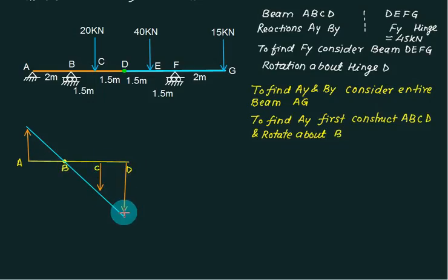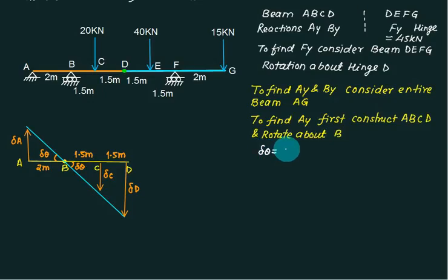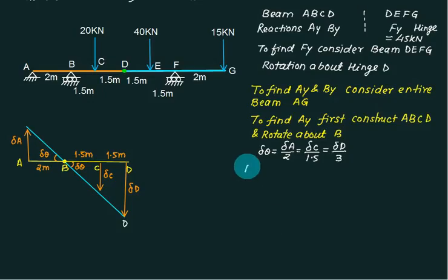This distance is 2 meters. The angular displacement is Del Theta. Del Theta equals Delta A divided by 2. Del C divided by 1.5. For the remaining part D, E, F, G, the support of the second part is at F, so rotation is always permitted about the support — rotate about F.